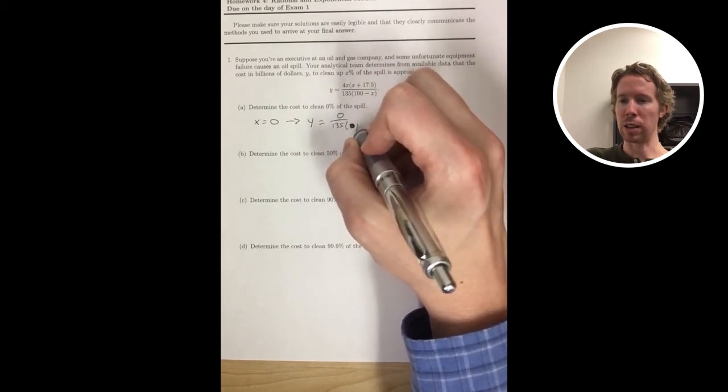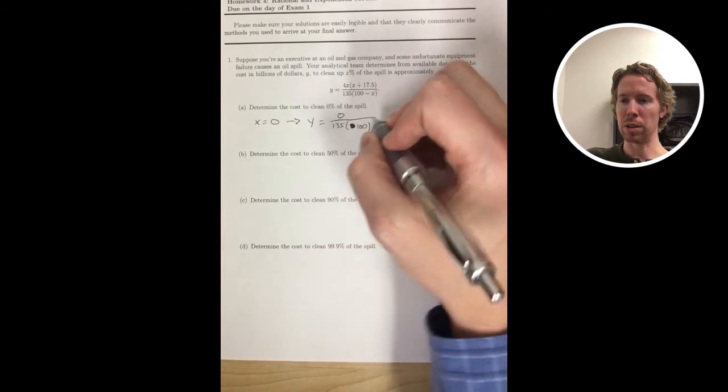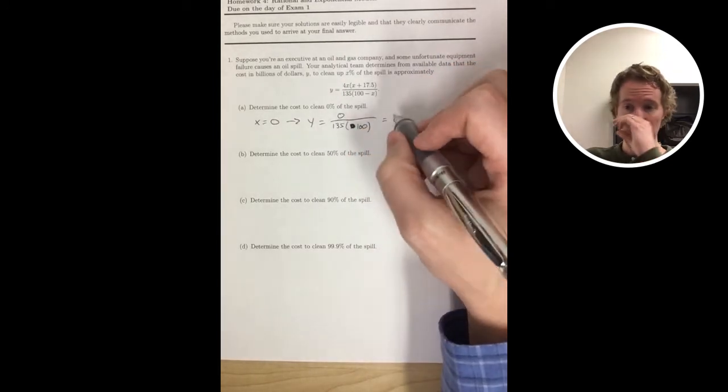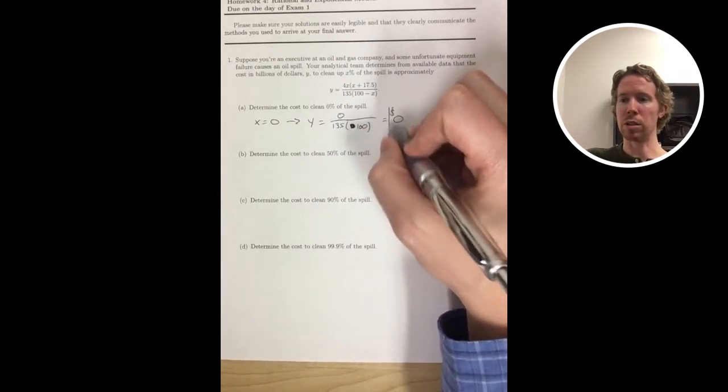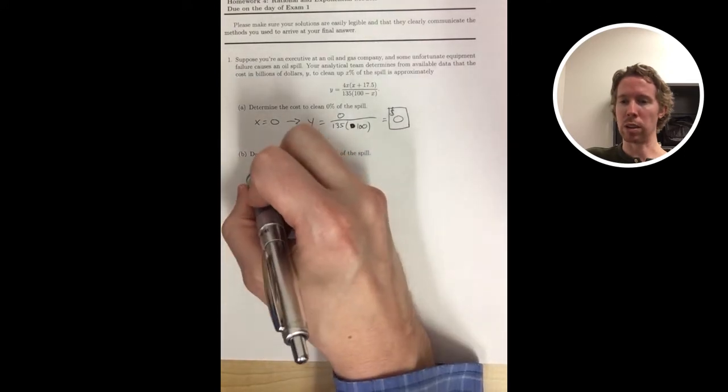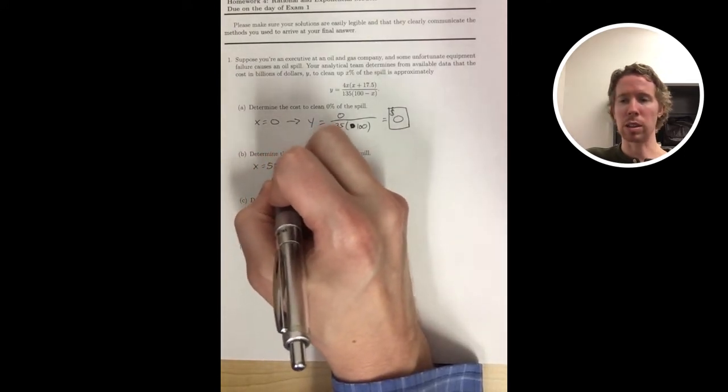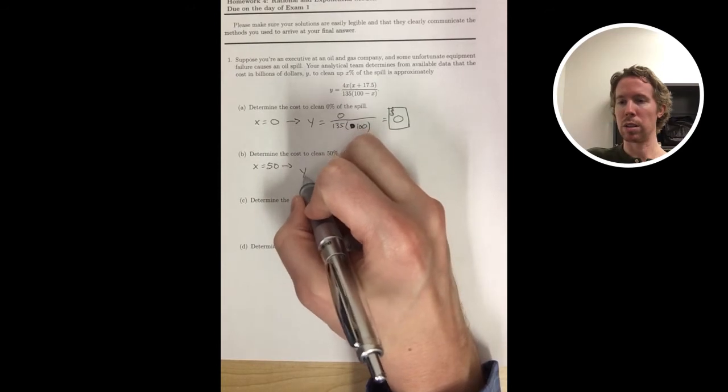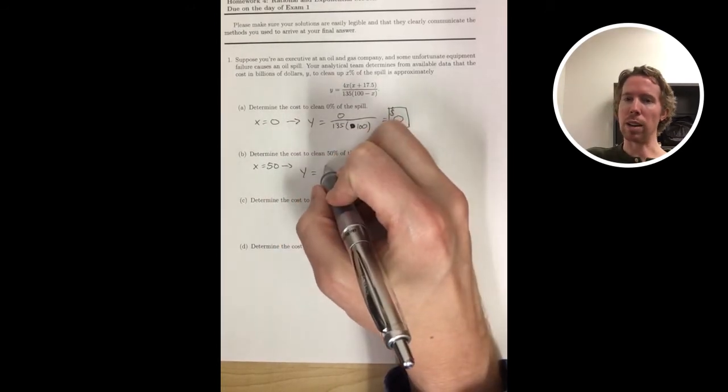In Part A we're asked to find the cost to clean 0% of the spill. If you look at the setup, X is the percentage of the spill that you're cleaning up and Y is the cost. So you just plug in X equals 0 to find the cost, and 0 divided by anything is 0.